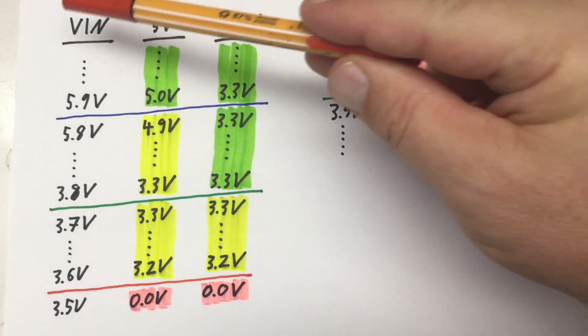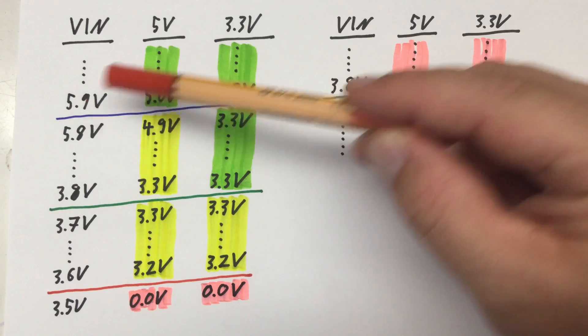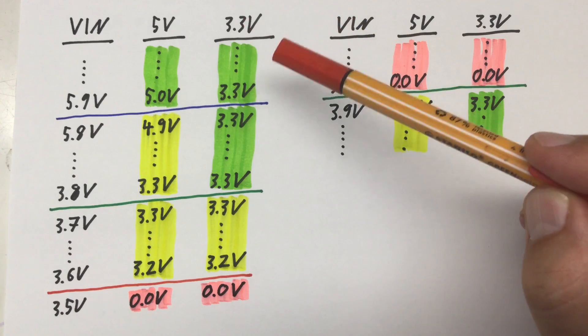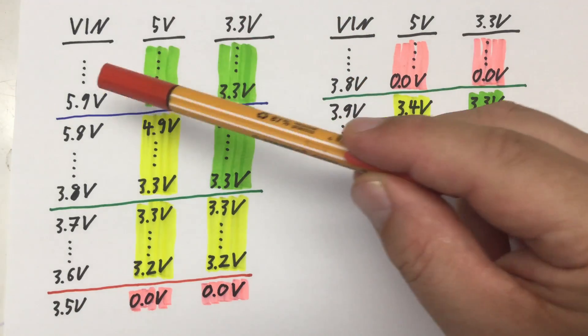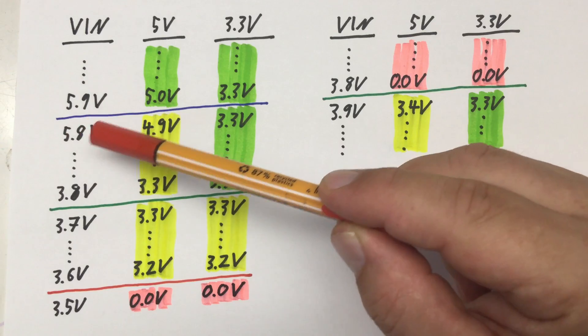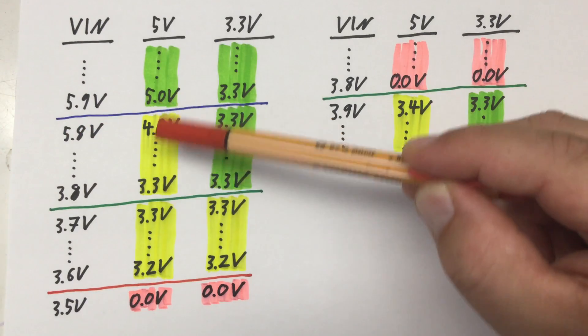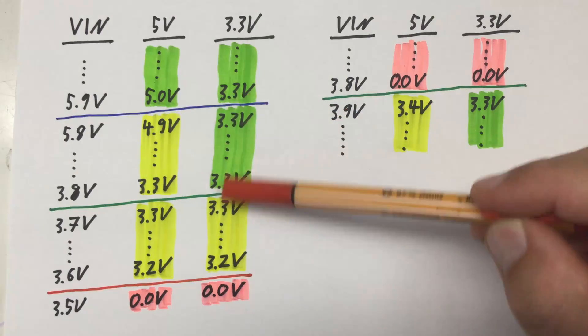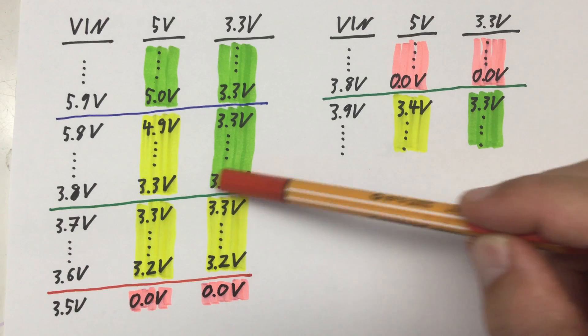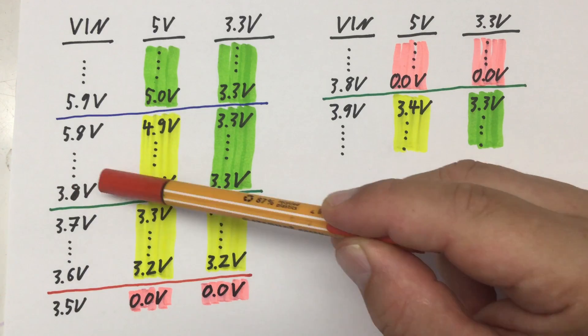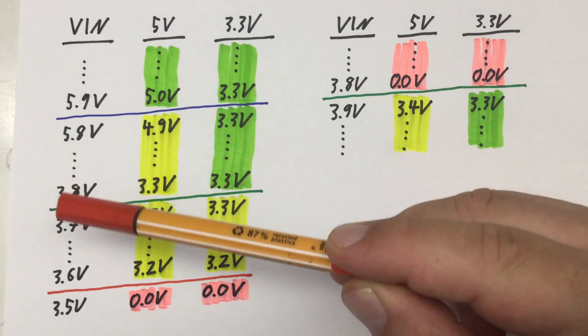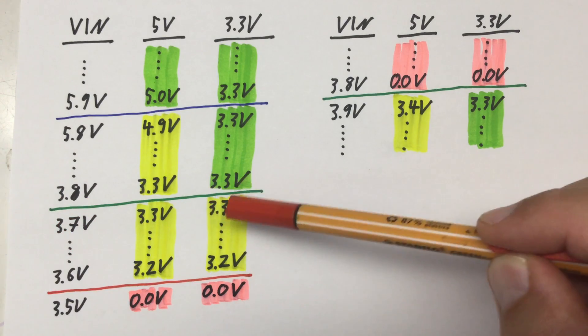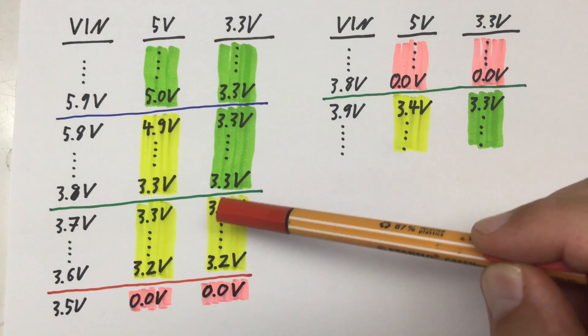Let me summarize that. Reducing our V-in slowly to 5.9 volts, everything is hunky dory. 5 volt rail is at 5 volts, 3.3 volt rail is at 3.3 volts. If we go below that to 5.8 volts, the 5 volt rail drops below 5 volts, but still everything is running. Our 3.3 volt rail stays stable at 3.3 volts down to 3.8 volts V-in. And then at the next step, 3.7 volts, we only have two digits but it was a little bit lower than 3.3 volts here.